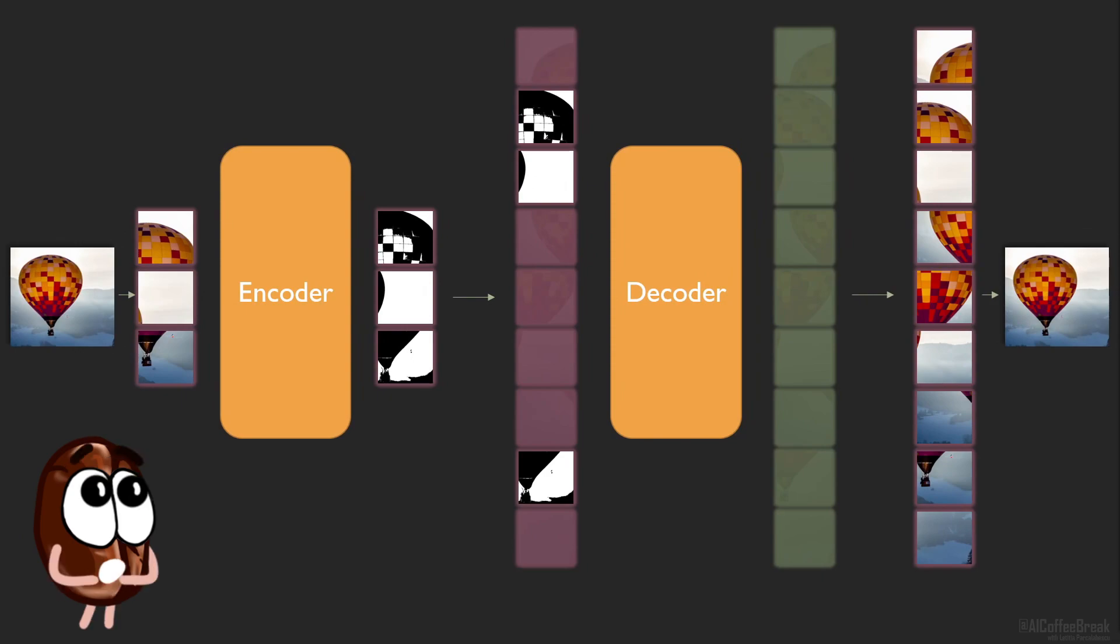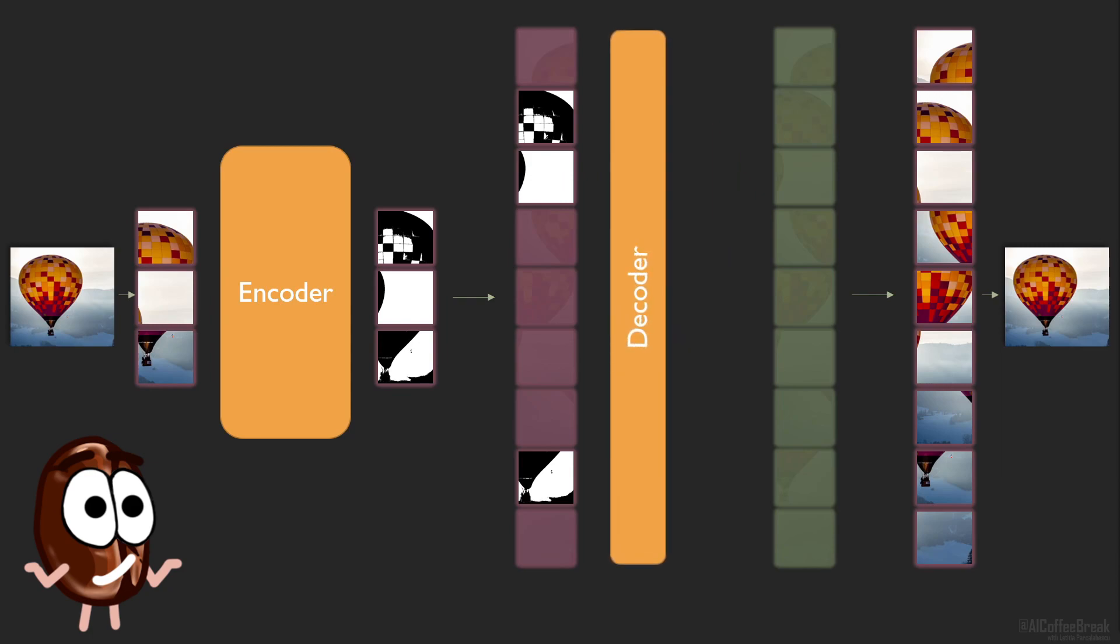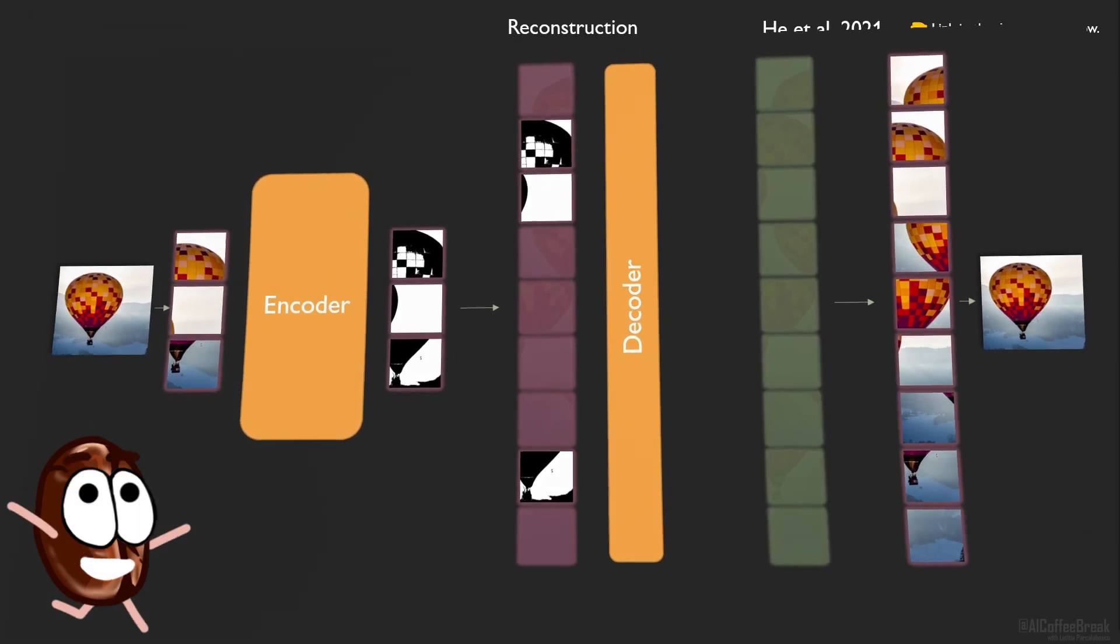It's important to note that while the encoder can be very big in terms of number of parameters, because its sequence length was significantly reduced by removing 75% of the tokens, the decoder operates on all patches, also on the masked ones, thus needs to be lightweight. And this was the masked transformer-based autoencoder.